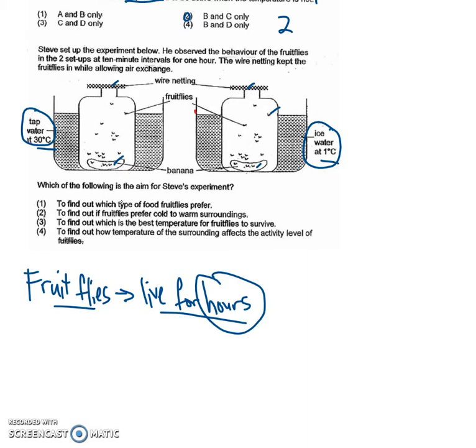Let's take a look at the answers. Which of the following is the aim for Steve's experiment? To find out which type of food fruit flies prefer. That's wrong because both of them have bananas.